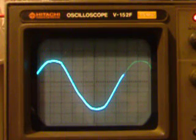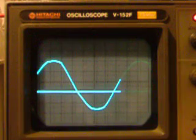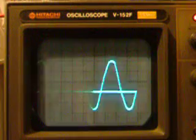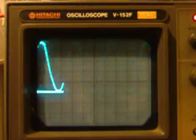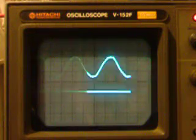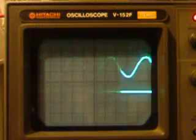When we put the scope into Dual Mode and show... What are we going to show? We're going to show the output of the power resistor. It's taking the output of the amp.